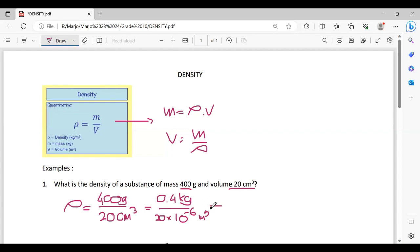And if we calculate the density, we're going to have the result 20,000 kilograms over meter cube. This is the result.